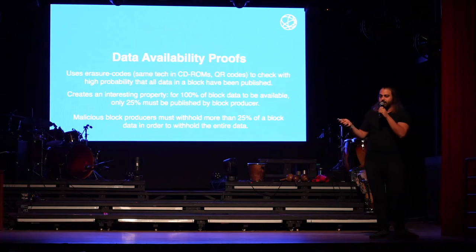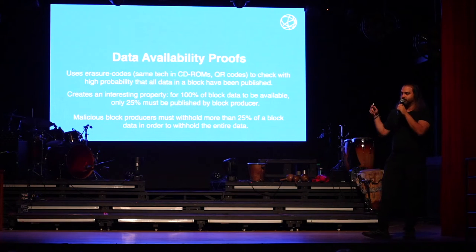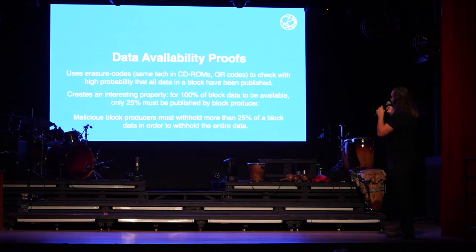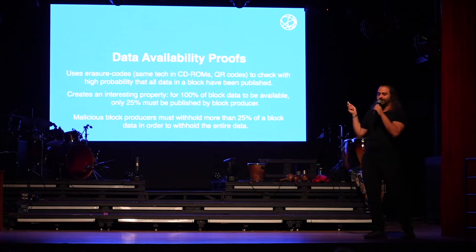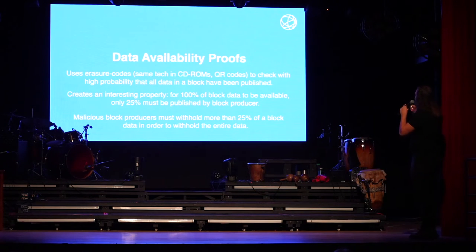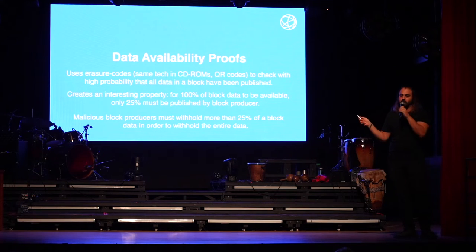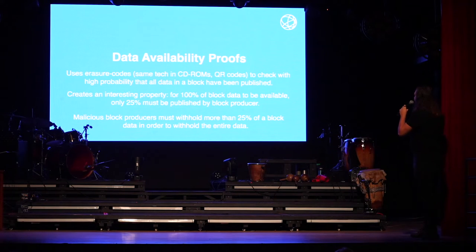When we say you can increase the block size, it's because of the modular property. When you separate execution from consensus and data availability, validators on Celestia are not verifying transactions. Celestia doesn't care whether a transaction is valid or invalid - all validators do is order transactions. For data availability proofs, we use something called erasure codes - the same kind of technology found in CD-ROMs and QR codes - to check with high probability if the data has been published. This creates an interesting property: for 100% of the block data to be available, only 25% must be published by the validator. Malicious block producers can withhold more than 25% of a block in order to withhold entire data.